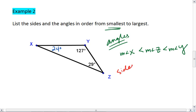We can now talk about sides. Angle X is the smallest angle, meaning side YZ is the shortest side. Angle Z is the middle angle, so side XY is then the middle side. Lastly, angle Y is the largest angle, making side XZ the longest side.